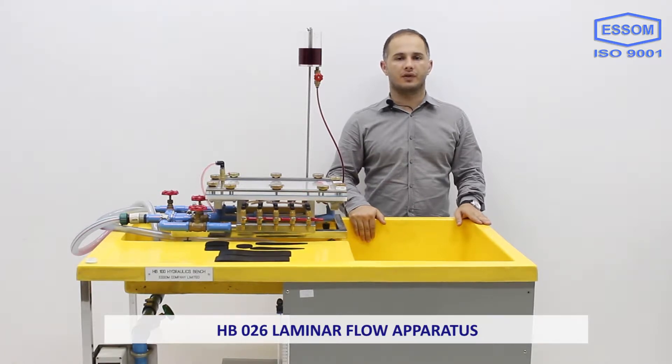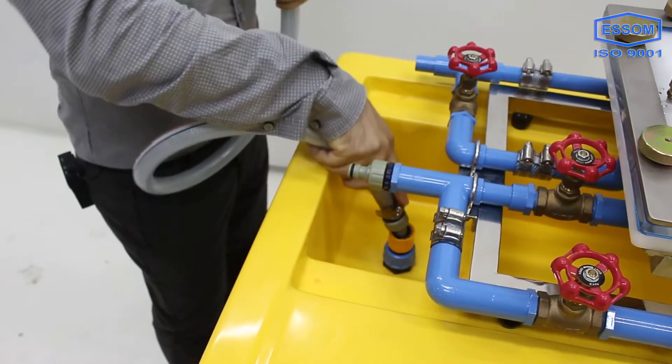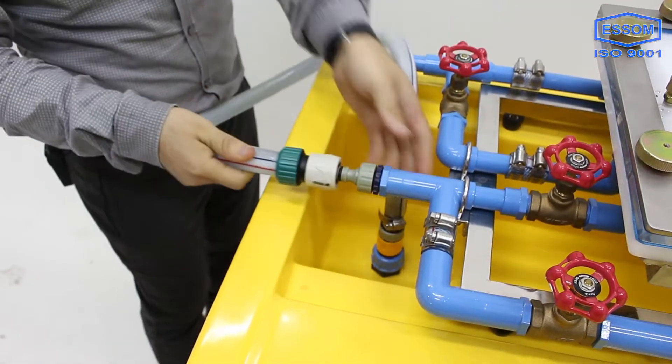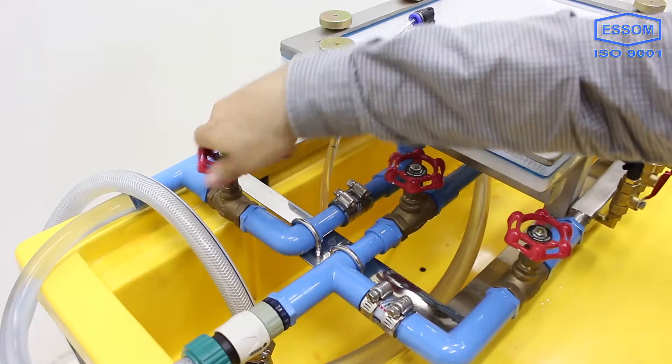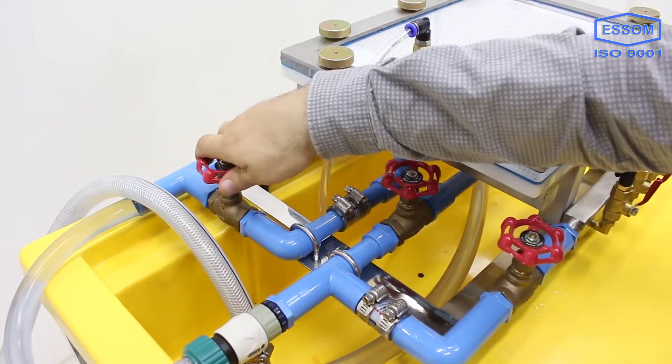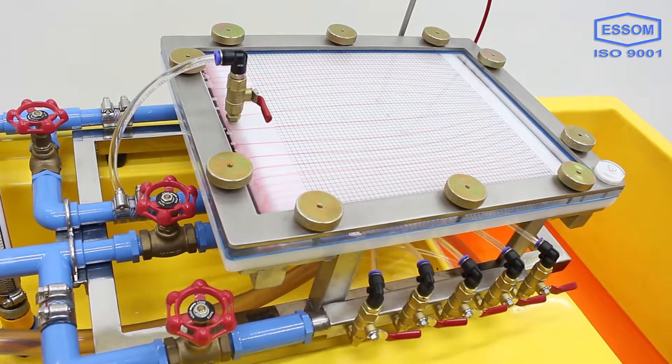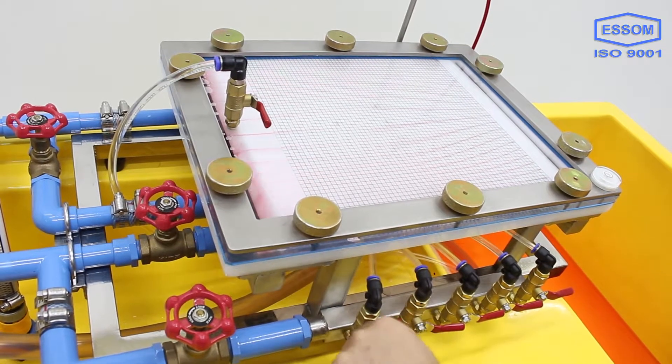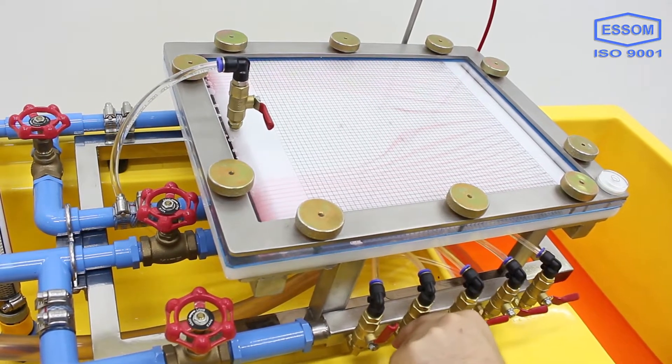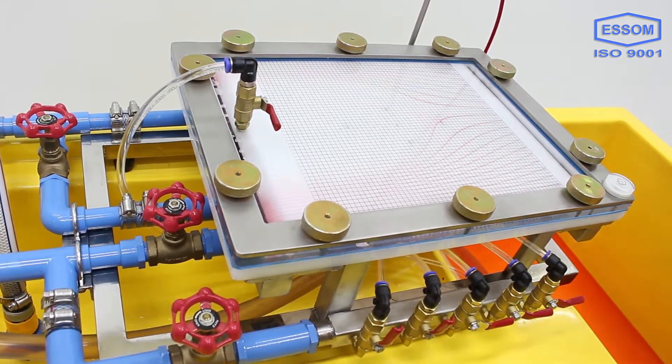SMHB026 laminar flow apparatus. This equipment is designed to study laminar flow in two dimensions and is to be used with HP 100 hydrolex bench, separately supplied. Two horizontal plates are placed closely together with seals and side aids. The top